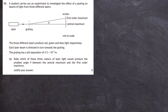Question 10 from the 2019 Higher Physics SQA exam, section 2. A student carries out an experiment to investigate the effect of a grating on beams of light from three different lasers. The laser goes through the diffraction grating, and the central maximum and the first order maximum are shown on the diagram. It's not drawn to scale.